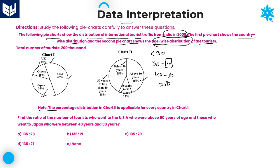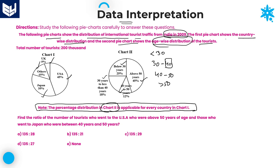There is one important note regarding this pie chart. The percentage distribution in chart 2 is applicable for every country in chart 1. Whatever country is given in chart 1, the age-wise distribution from chart 2 is also applicable country-wise. The total number of tourists is also given — 200,000. Based on this complete information, we need to solve the problems.